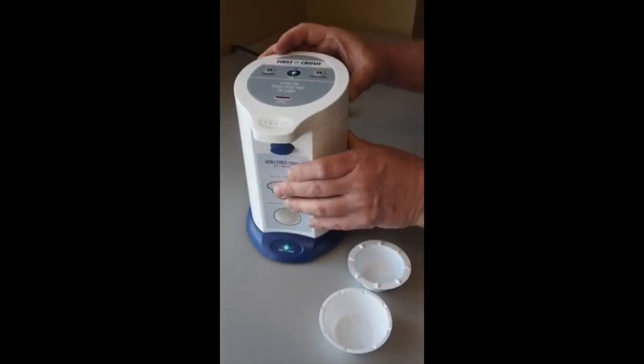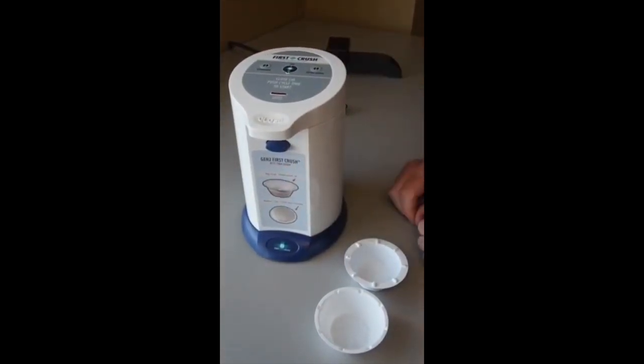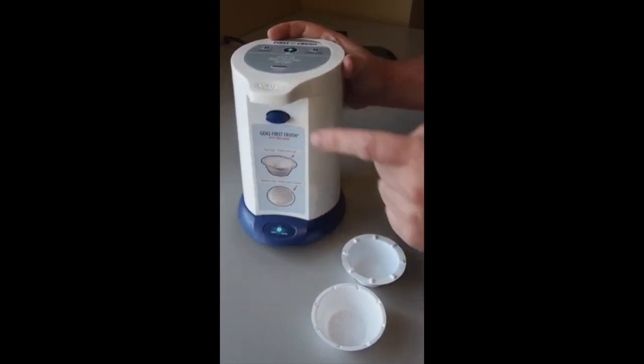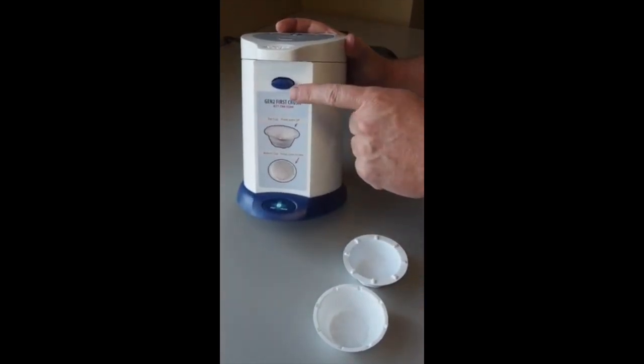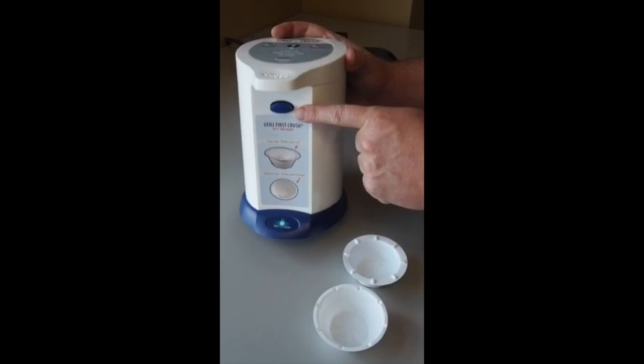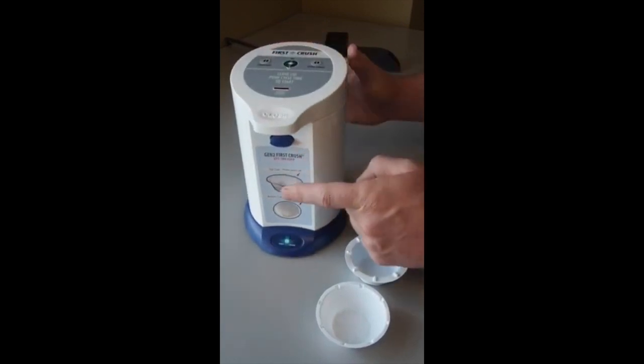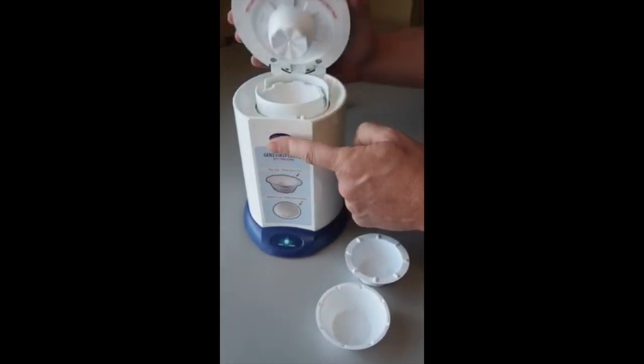To open up the unit, it's fairly simple. You simply push the blue open button that is located under the lid and lift the lid. This can be conducted either with two hands or with one hand, once you become familiar with the unit.